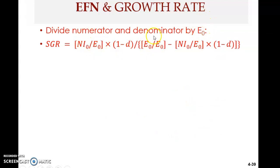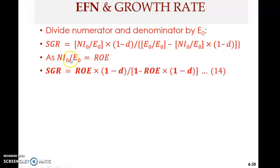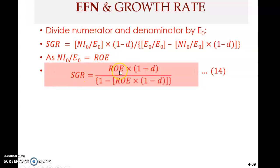Net income over equity is ROE. Therefore SGR equals ROE multiplied by (1 minus d), all divided by 1 minus ROE multiplied by (1 minus d). The only difference between IGR and SGR is that IGR uses ROA while SGR uses ROE — otherwise the formula structure is identical. The formula sheet will be provided in tests and the final exam.